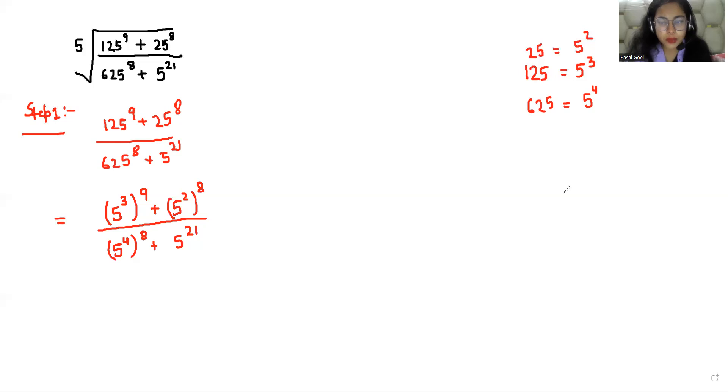Now we know the rule of exponent that x power m power n is equal to x power m times n. So I'm going to apply this rule here. 5 power 3 power 9 I can write as 5 power 27. Similarly 5 power 2 power 8 I can write as 5 power 16. And 5 power 4 power 8 is 5 power 32.